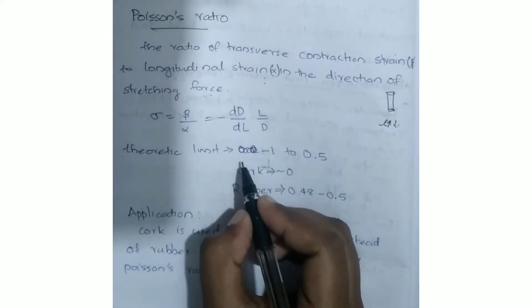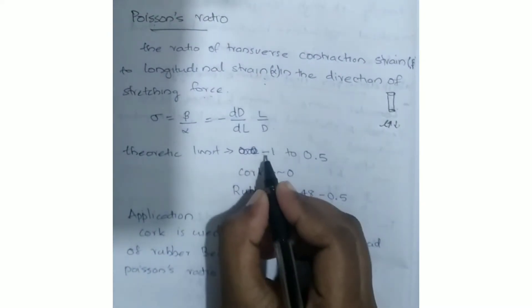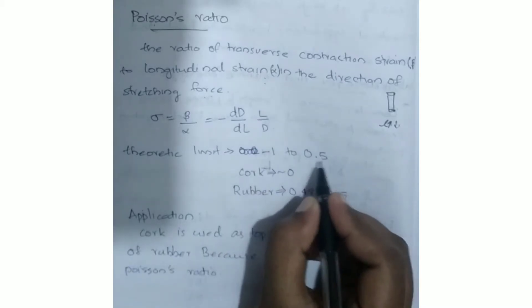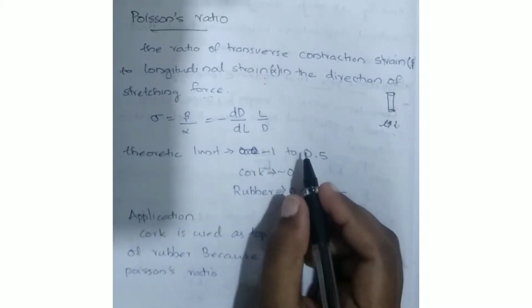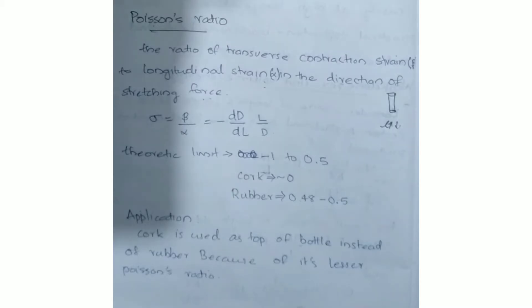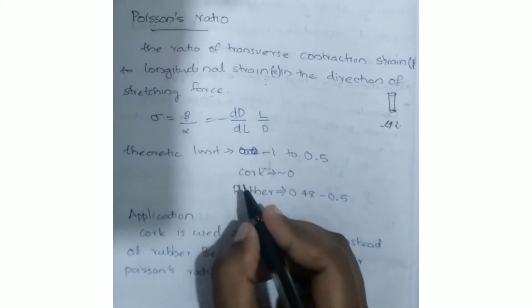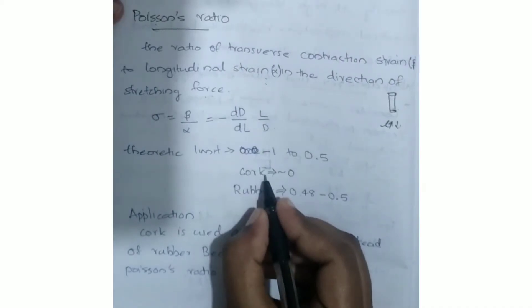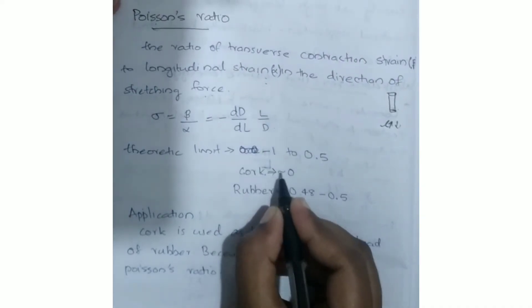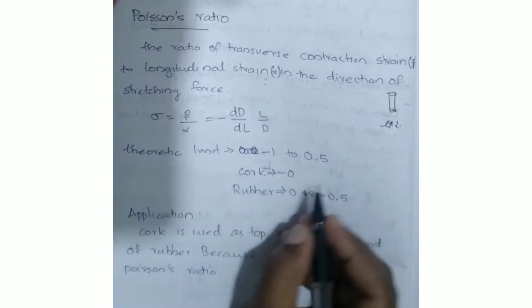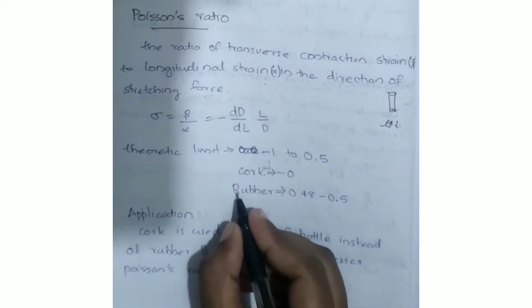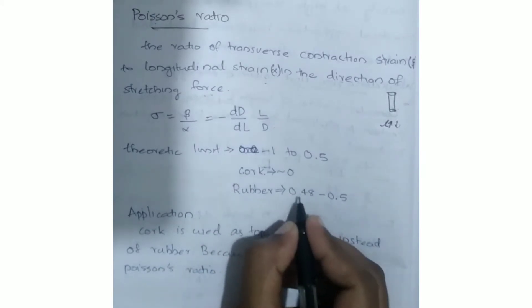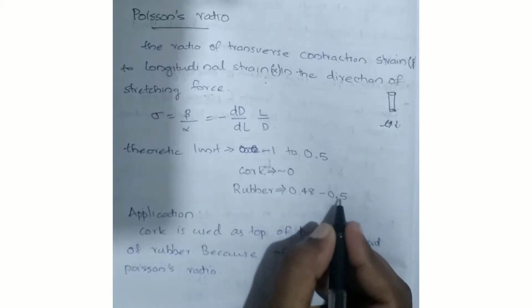We have the theoretical limits. The Poisson's ratio is equal to minus 1 to 0.5. For cork, the Poisson's ratio is approximately equal to 0. For rubber, the Poisson's ratio is 0.48 to 0.5.